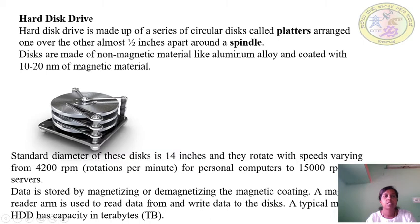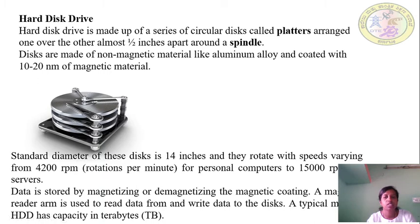Next, the hard disk drive. It is made up of a series of circular disks called platters. Each disk is 1.5 inches apart, combined with a spindle. Disks are made of non-magnetic material like aluminum alloy, coated with a magnetic material, and the width of this coating is 10 to 20 nanometers. The standard diameter is 14 inches, and they rotate at speeds varying from 4200 RPM for personal computers to 15,000 RPM for servers.